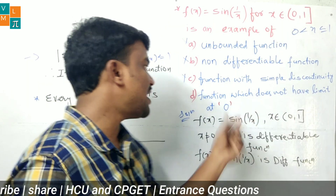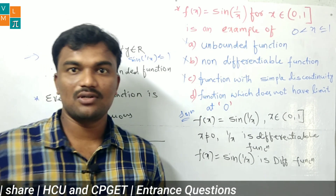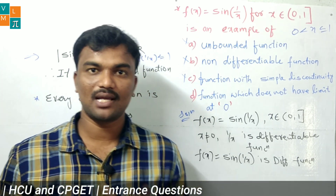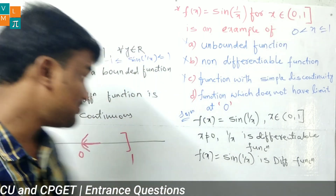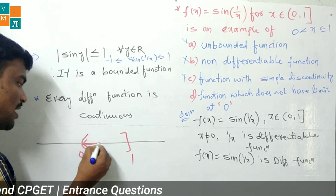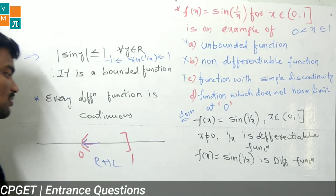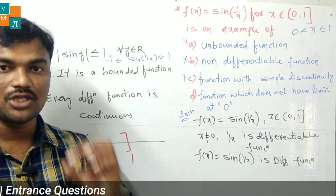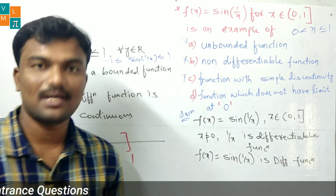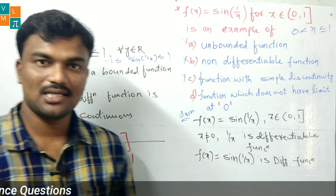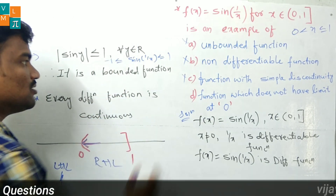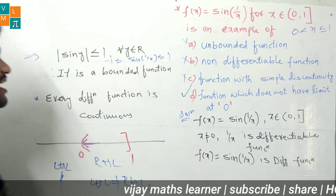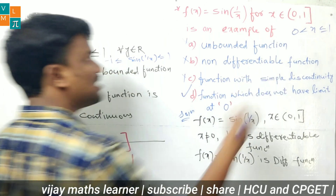Option D: the function does not have a limit at 0. A limit exists if the left-hand limit (LHL) equals the right-hand limit (RHL). However, the domain is the open interval (0, 1], so only right-hand side values exist near 0. The left-hand limit does not exist here since we have no values to the left of 0 in the domain. Therefore LHL ≠ RHL, so the limit does not exist at 0. Option D is correct.